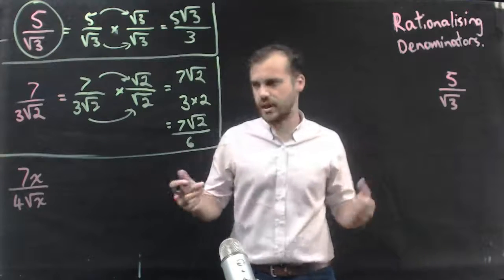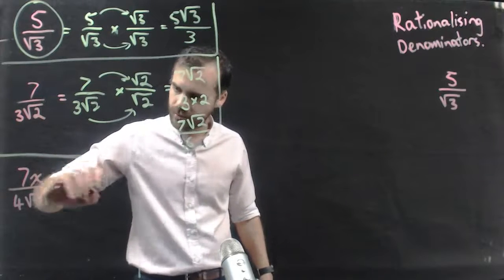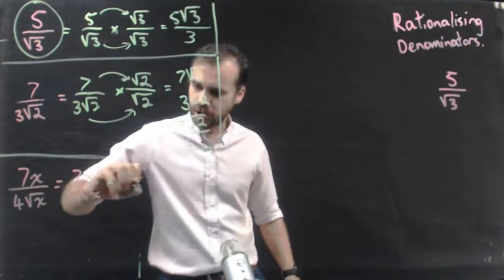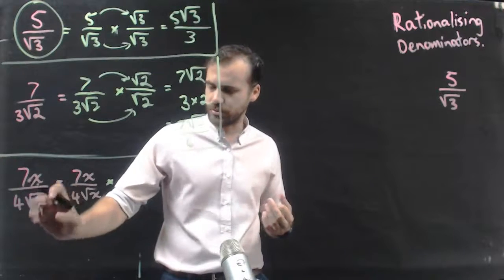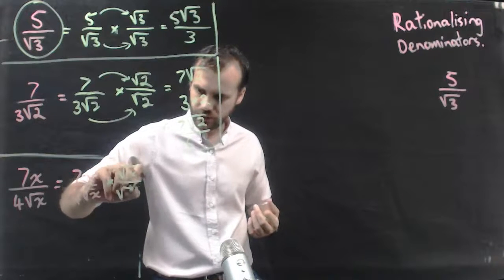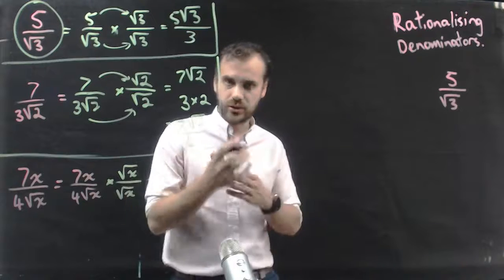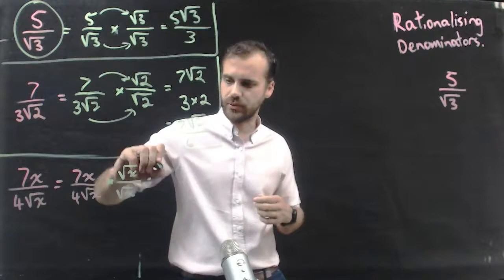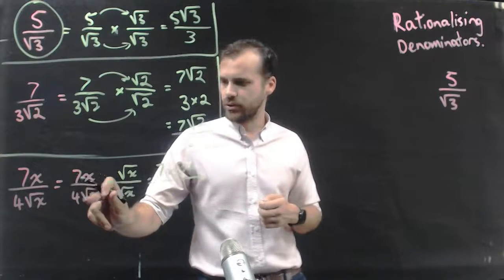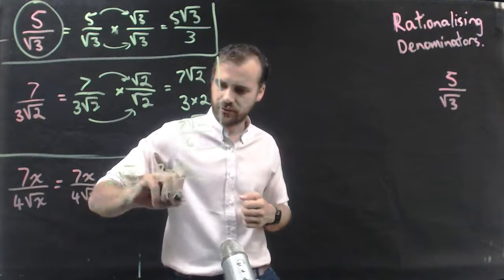It doesn't change if things are algebraic. 7x on 4 root x. I'm going to take my fraction and multiply it by 1. Now, in this case, I'm going to multiply it by the irrational part of the bottom, which is root x on root x. So 7x times root x, now you can change this in a number of different ways, but we're just going to write it as 7x root x on 4 root x times root x, 4x.